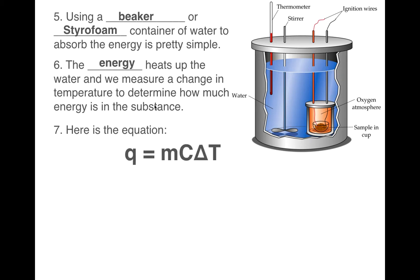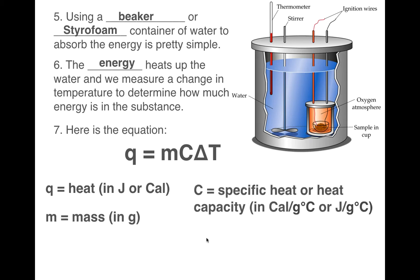And the equation we use is called Q equals mcΔT. So that's Q equals m times capital C times, and yeah, that's a triangle, that's a delta symbol, and so it's delta T. Q, that's heat. That can be measured in joules or calories. M, that's the mass. That has to be in grams. C is a constant. It's the specific heat or the heat capacity. These are the units: calories over grams degrees Celsius or joules over grams degrees Celsius.